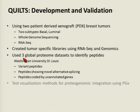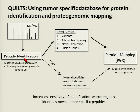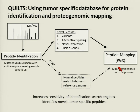After building the database, we use it to identify peptides from three global proteome datasets collected at WashU. We do spectral matching against our specific database, filter out normal peptides, and focus on novel peptides. We also map all peptides back to the genome using a tool called PGX, which I'll go into in more detail in the following slides.